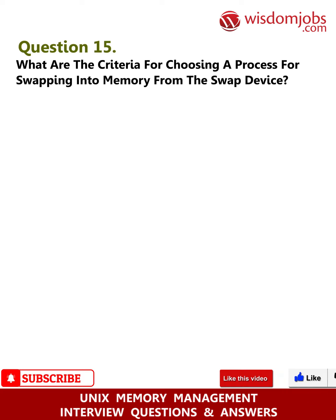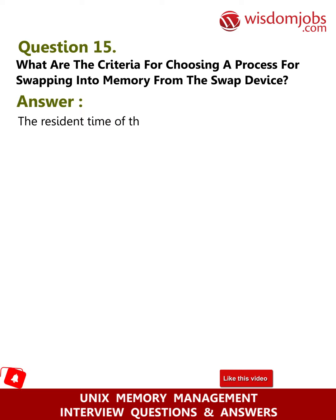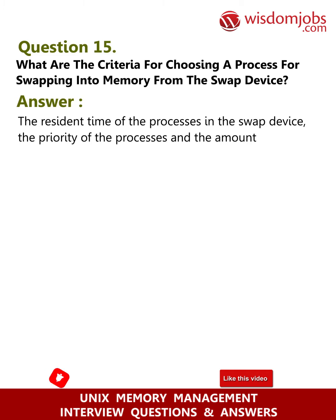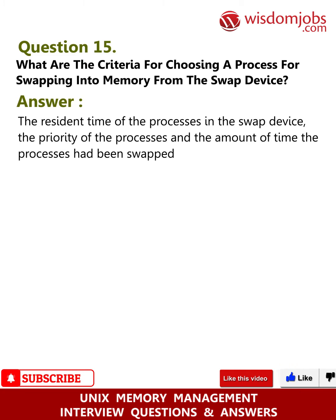Question 15: What are the criteria for choosing a process for swapping into memory from the swap device? Answer: The criteria are: the resident time of the process in the swap device, the priority of the process, and the amount of time the process has been swapped out.